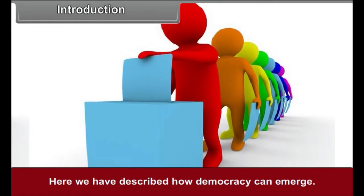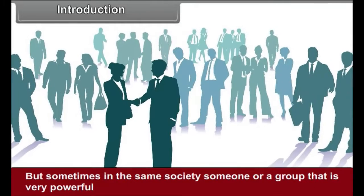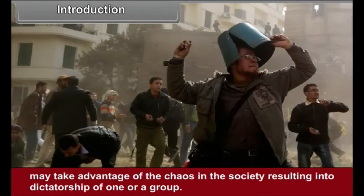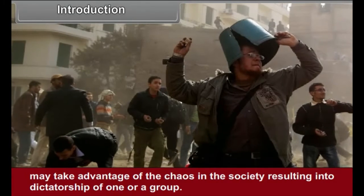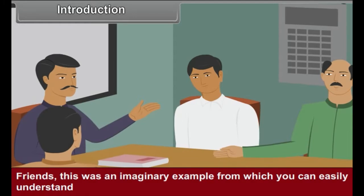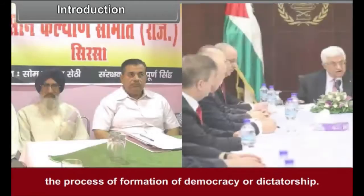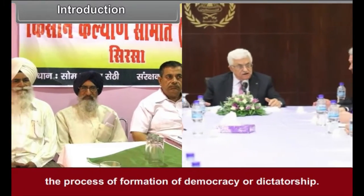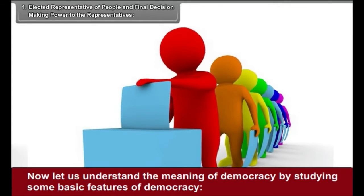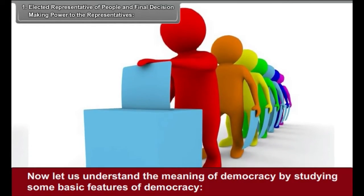Here we have described how democracy can emerge. But sometimes in the same society, someone or a group that is very powerful may take advantage of the chaos in the society, resulting in a dictatorship of one or a group. This was an imaginary example from which you can easily understand the process of formation of democracy or dictatorship. The following chart will help you in understanding this process in detail. Now let us understand the meaning of democracy by studying some basic features of democracy.